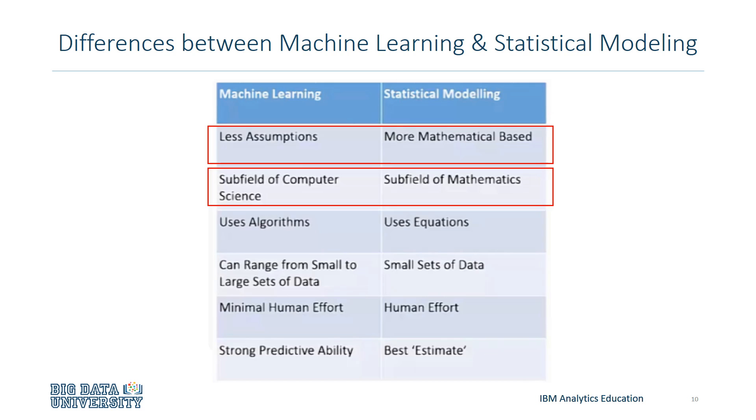Machine learning is a subfield of computer science and uses algorithms, while statistical modeling is a subfield of mathematics and uses equations. One of the main things that makes machine learning useful is that it also works well with large sets of data, whereas statistical modeling has a hard time doing so.